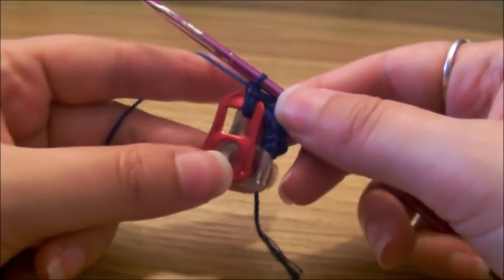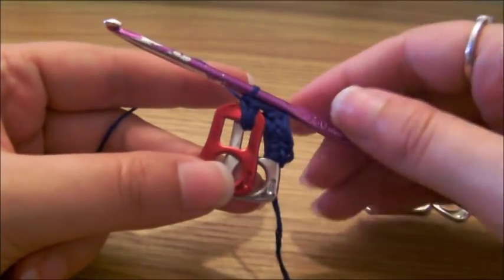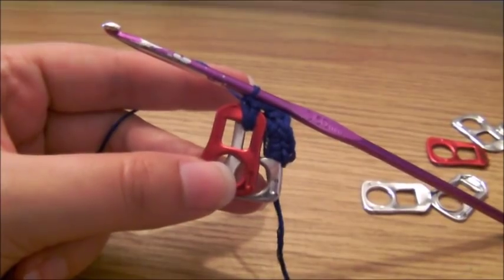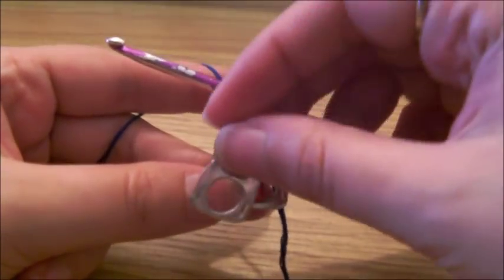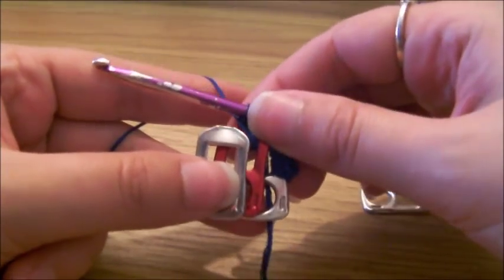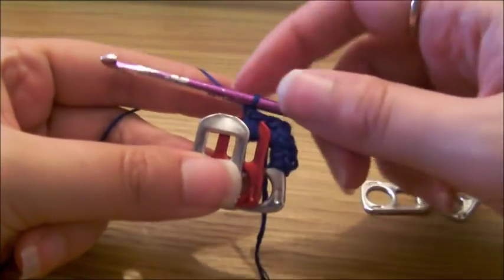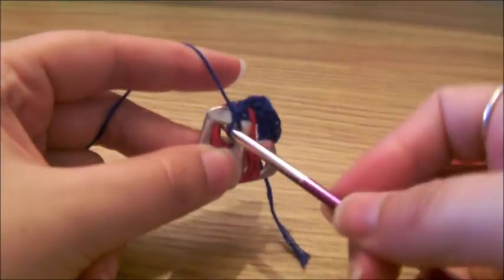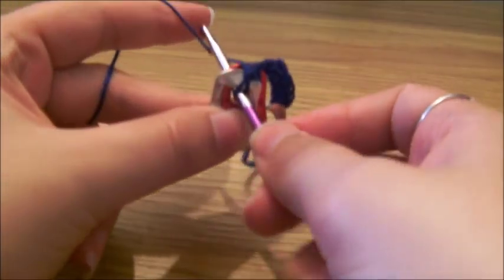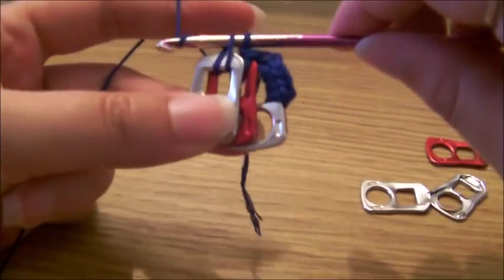So each time you're going to do two stitches. You slide that over slightly, grab another pop tab, and we're going to repeat this step. So each time you're going through the top two pop tabs. So you're only going through two tabs at a time and you're doing two stitches.